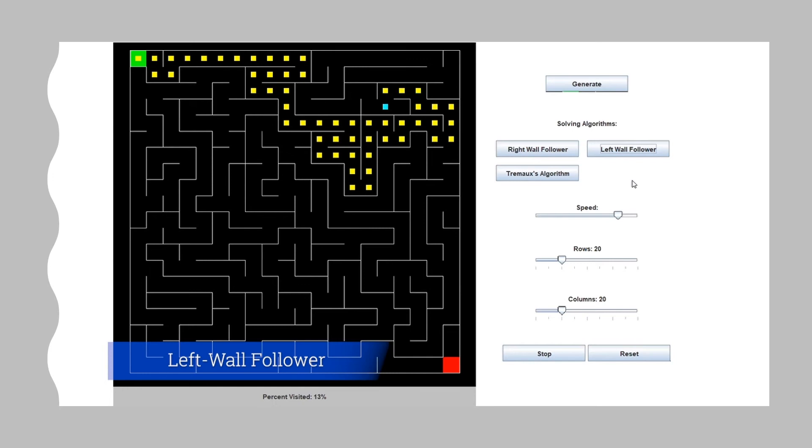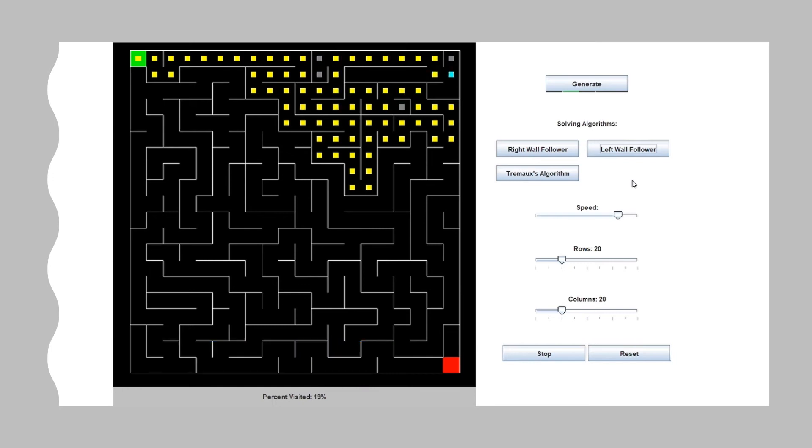Now we will do the left wall follower. The current cell and paths are visually represented the same way.